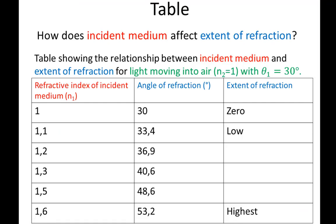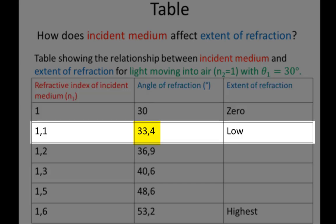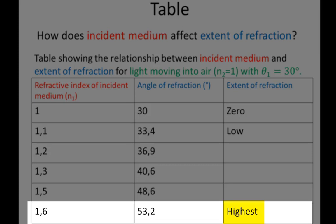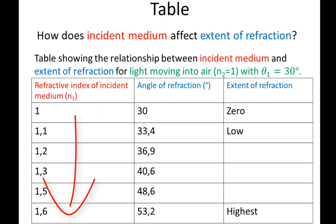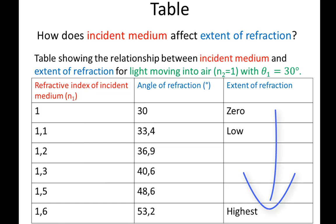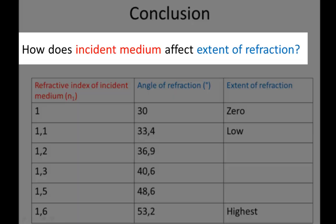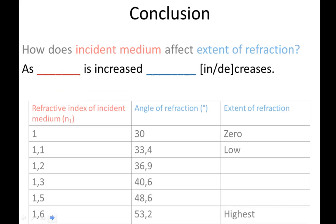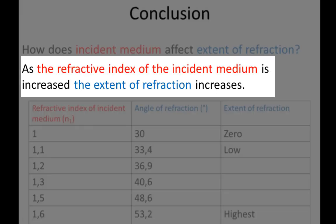So a greater angle in this case corresponds to a greater extent of refraction. In the first reading there's zero refraction. An angle of refraction of 33.4 degrees for an angle of incidence of 30 degrees is a low extent of refraction. The highest extent of refraction in this case is when we get an angle of 53.2 degrees. We see that as the refractive index of the incident medium is increased from 1 to 1.6, the extent of refraction is also increased. So how do we answer the question? As the refractive index of the incident medium is increased, the extent of refraction increases.